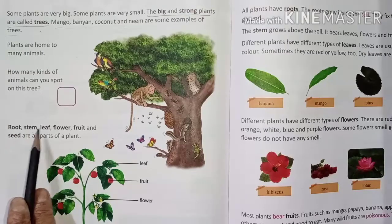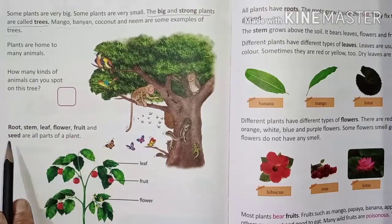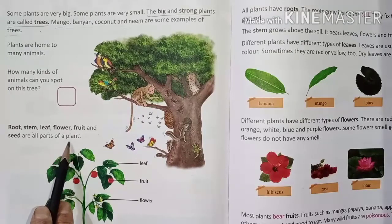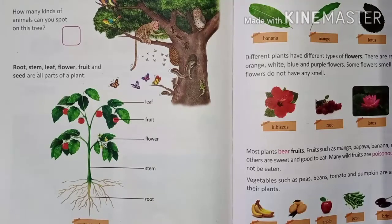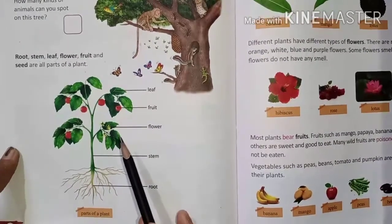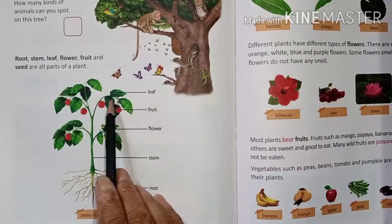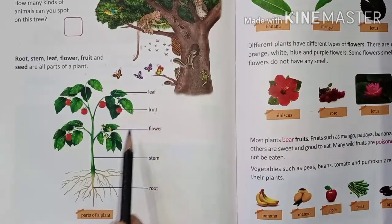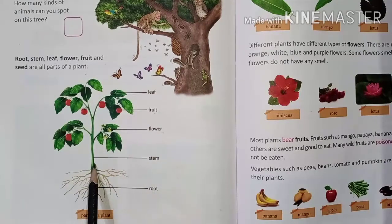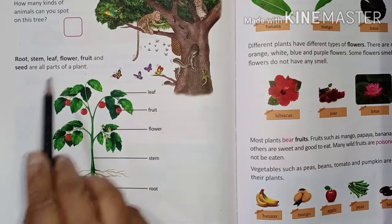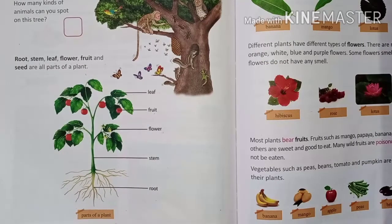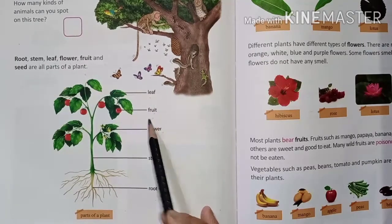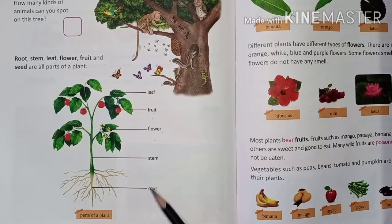Root, stem, leaf, flower, fruit, and seed are called the parts of plants. Let us see the figure of a plant — the parts of a plant. See: this is a leaf, this is a fruit, this is a flower, this is a stem, and this is a root. All these are parts of plants: leaf, fruit, flower, stem, and root.